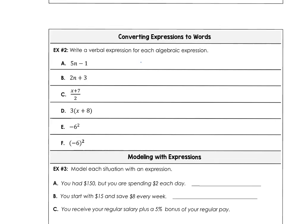So in example 2, we have the algebraic expression and we're going to convert that to a verbal expression. So in the first example, 5n minus 1, we could say that that's 1 less than 5 times a number.